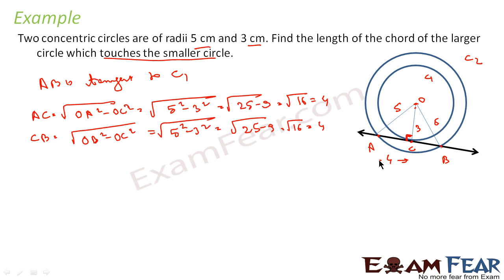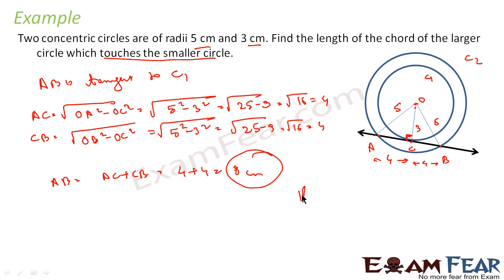So AC equals 4 and CB equals 4. Therefore, AB equals AC plus CB, which is 4 plus 4 equals 8 cm. To summarize: I drew two concentric circles, drew chord AB tangent to the smaller circle C1, used the 90-degree angle at the tangent point, and applied Pythagoras' theorem to find the answer.